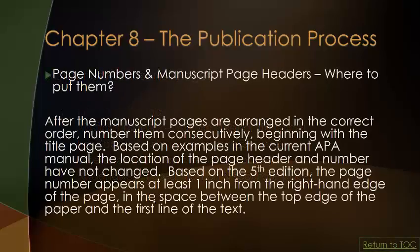The last thing to cover is where to put page numbers and manuscript page headers. After the pages are arranged in the correct order — title page, abstract, body, and reference page — the page number appears at least one inch from the right-hand edge of the page, in the space between the top edge of the paper and the first line of text. Videos are provided showing you how to set this up.